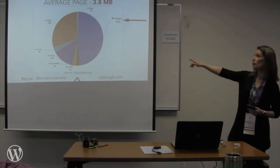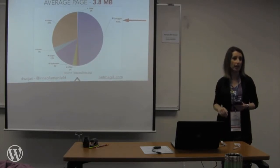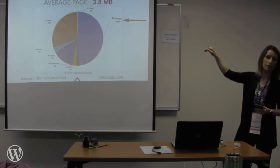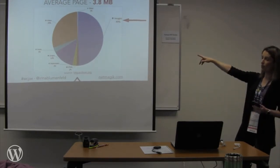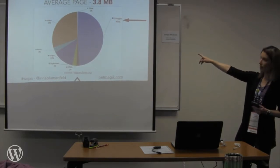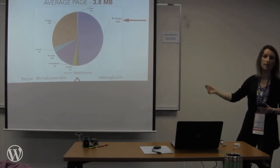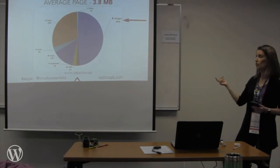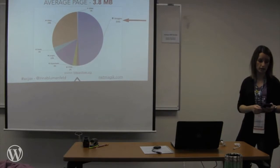This chart shows the breakdown of an average page on the web right now. It is almost four megabytes in size, and you can see half the page — shown in blue — is taken up by images. A little more than a quarter is video, and the rest is stylesheets, scripts, and fonts. So optimizing images is really important when it comes to website speed and user experience.